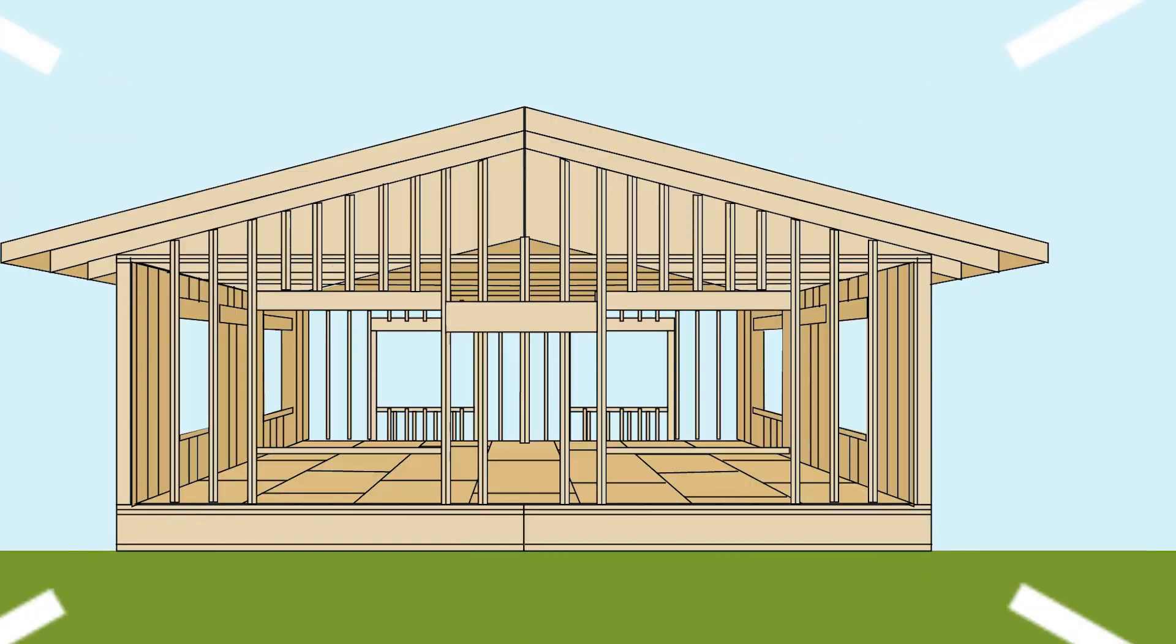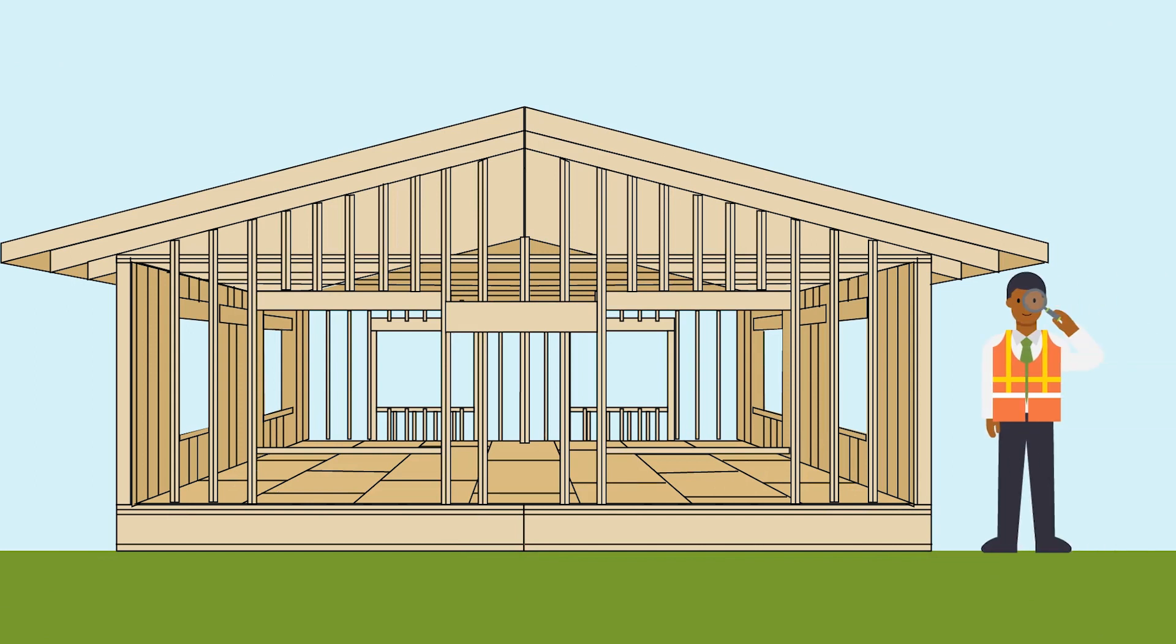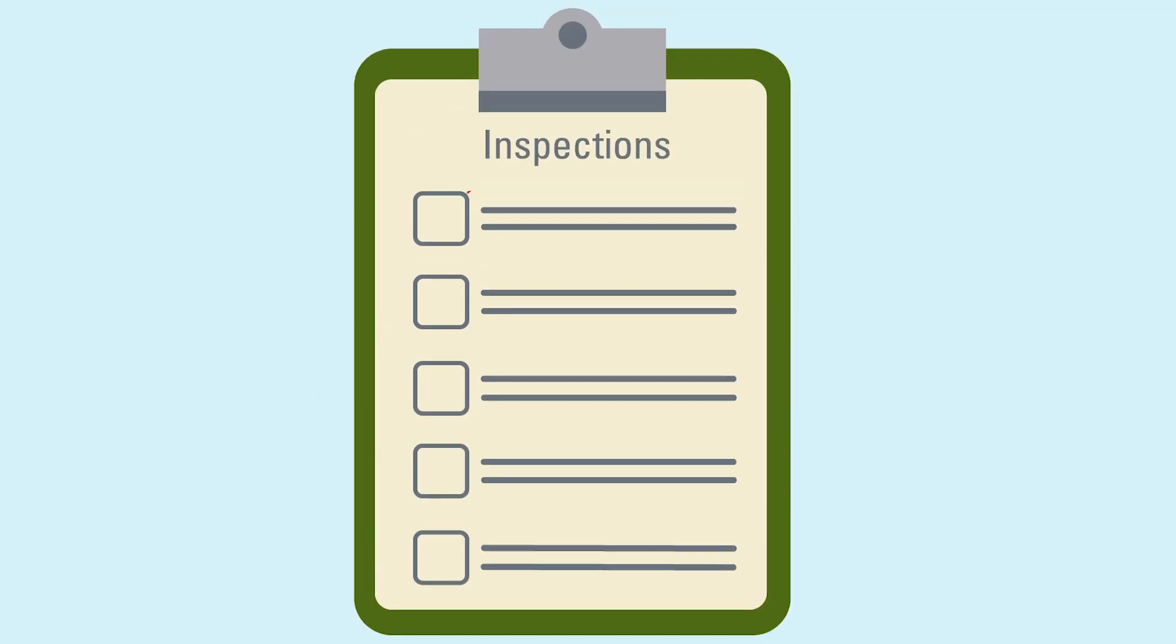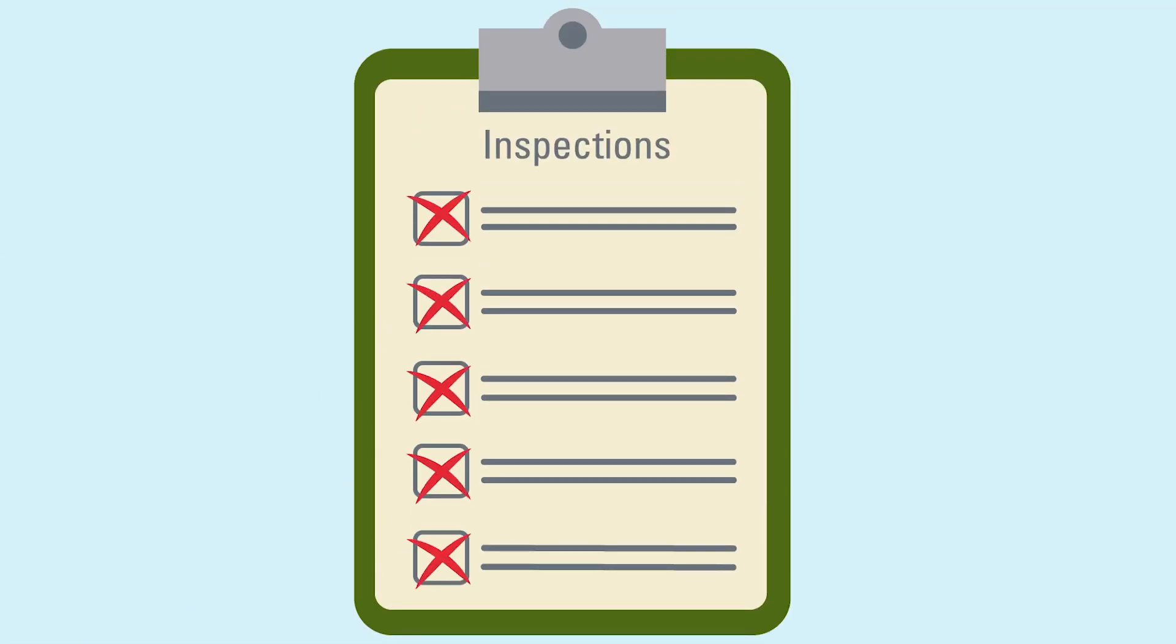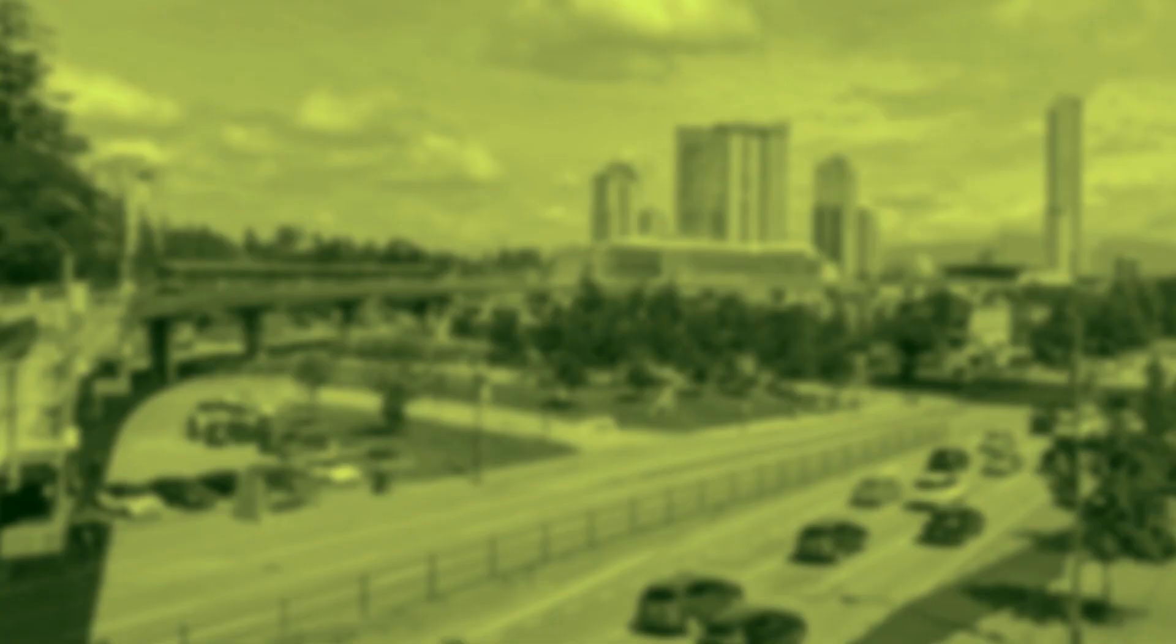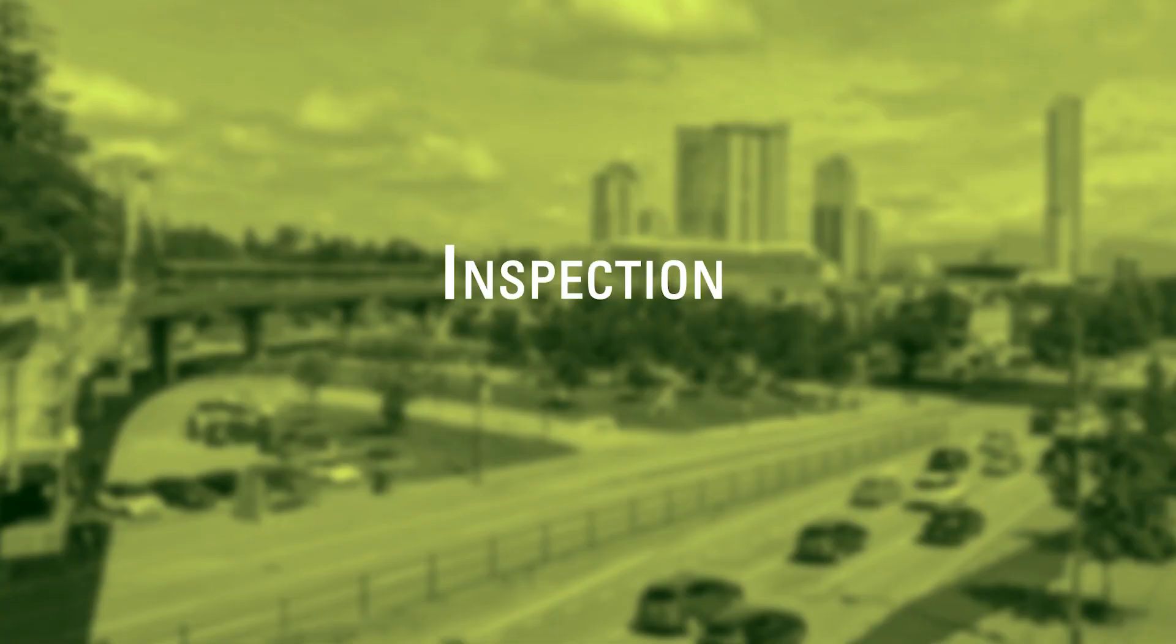As you complete each stage of your build, be aware that the inspector may identify deficiencies your team needs to address. Re-inspections will be required until the inspector is satisfied with the work and issues an acceptance. Having an inspection is not enough to move on in your building. You must have an acceptance to move on to the next stage.